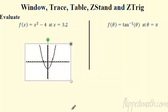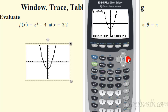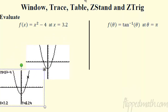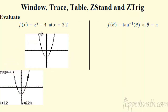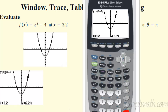You can use trace on the function — it shows you the coordinates. The problem is it jumps around based on pixel settings, so you can't hit exact values like 3.2 just by scrolling. But if you hit trace and then type in 3.2 and hit enter, you can hit it exactly. So trace-then-type gets you exactly the answer you're looking for.